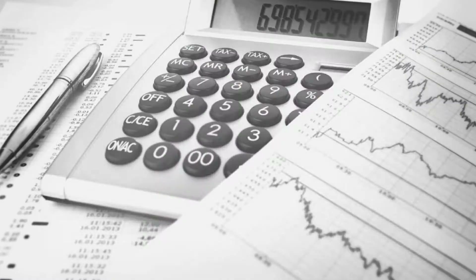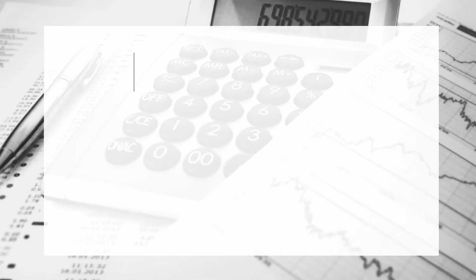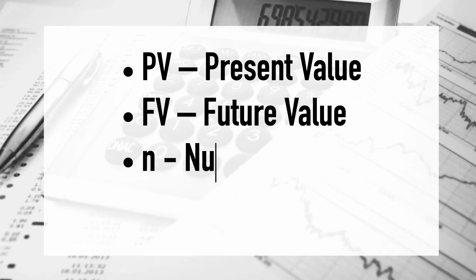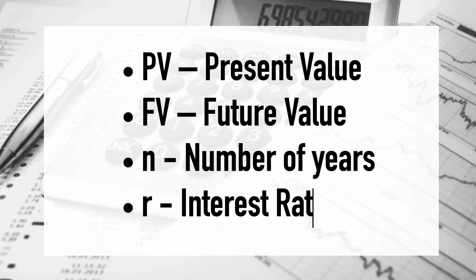Before we jump into the actual formulas, here's a quick overview of what the different parts of the formula stand for — it looks very confusing but trust me, it's actually a lot easier than you think. We've got PV for present value, FV for future value, N for the number of years the money is invested for, and R for the interest rate.